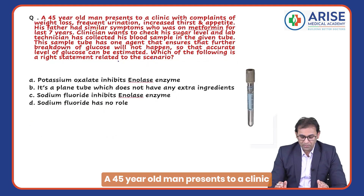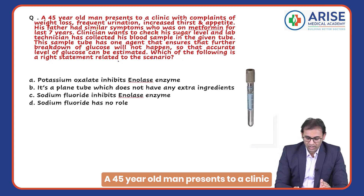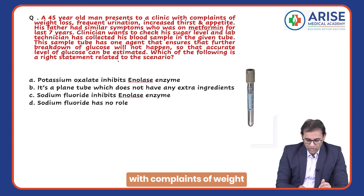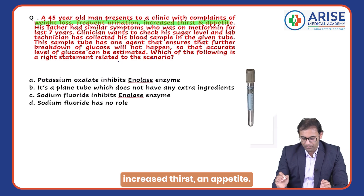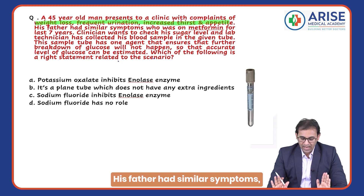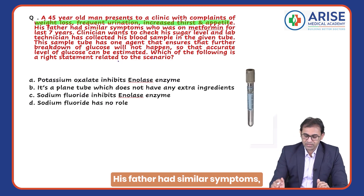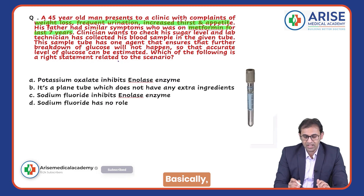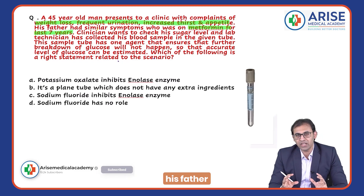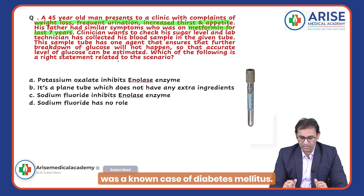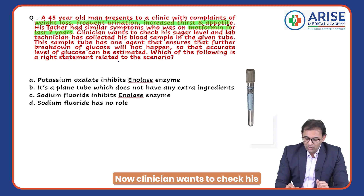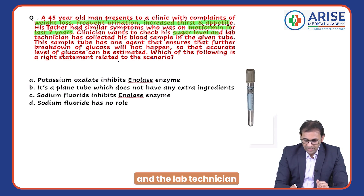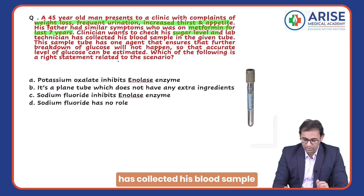A 45-year-old man presents to our clinic with complaints of weight loss, frequent urination, increased thirst, and appetite. His father had similar symptoms and was on metformin for the last seven years — basically his father was a known case of diabetes mellitus. The clinician wants to check his sugar level and the lab technician has collected his blood sample.